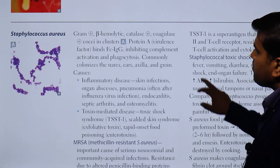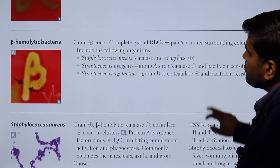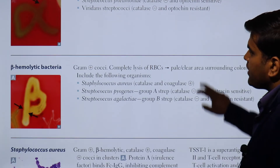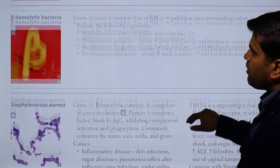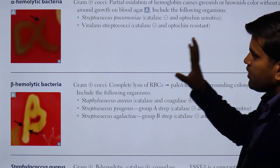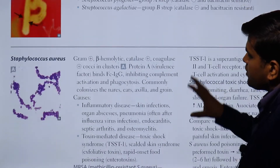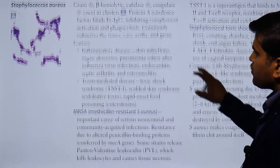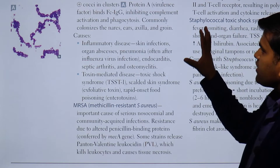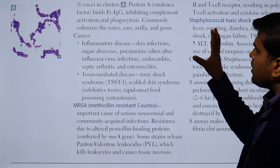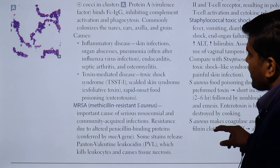We are talking about this on page 135. We have discussed about alpha hemolytic then beta hemolytic bacteria that cause complete lysis, alpha hemolytic where you have seen partial hemolysis of an RBC. Then we talked about in detail about Staphylococcus aureus, which is gram-positive, beta hemolytic, catalase positive, coagulase positive, cluster group of organism.